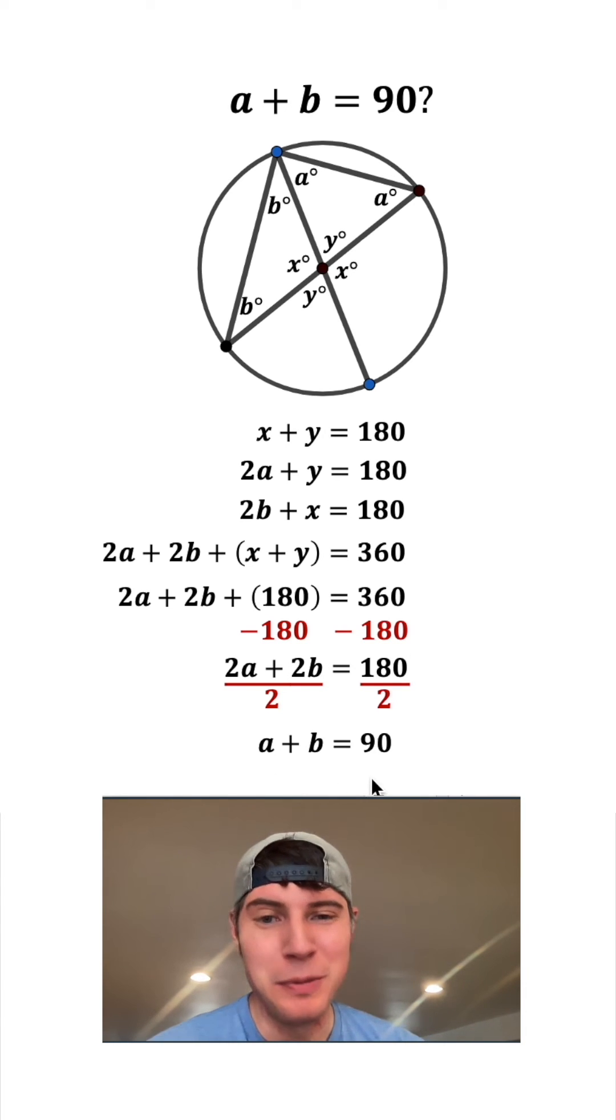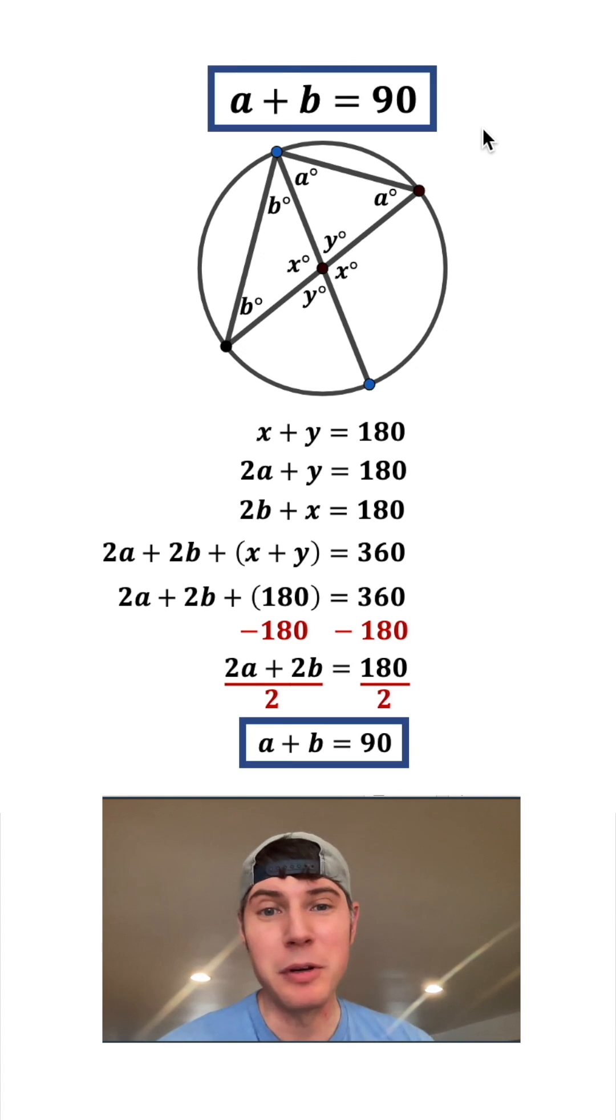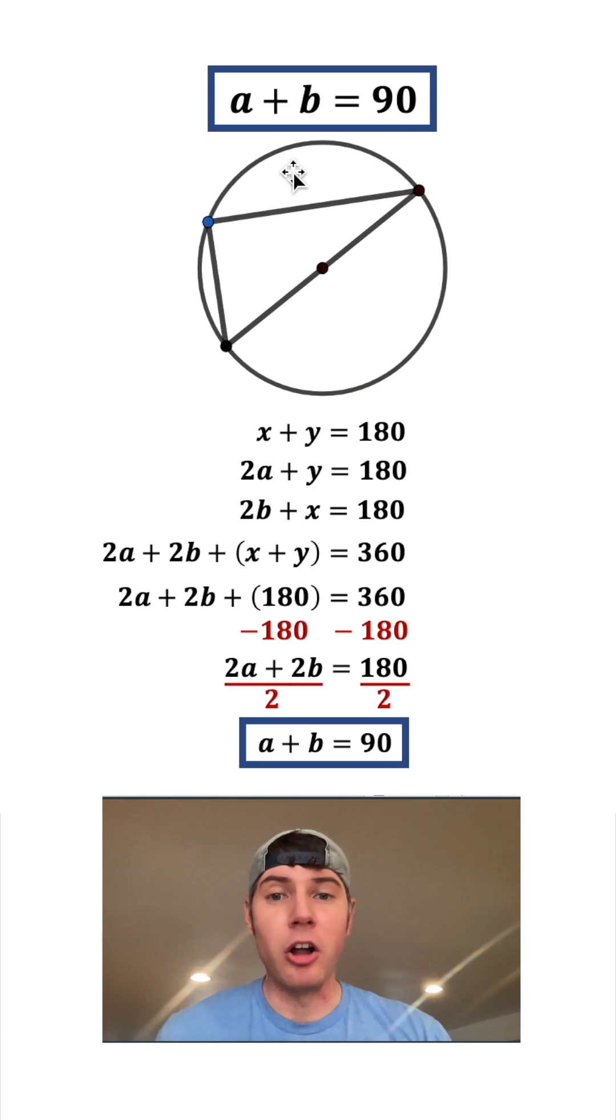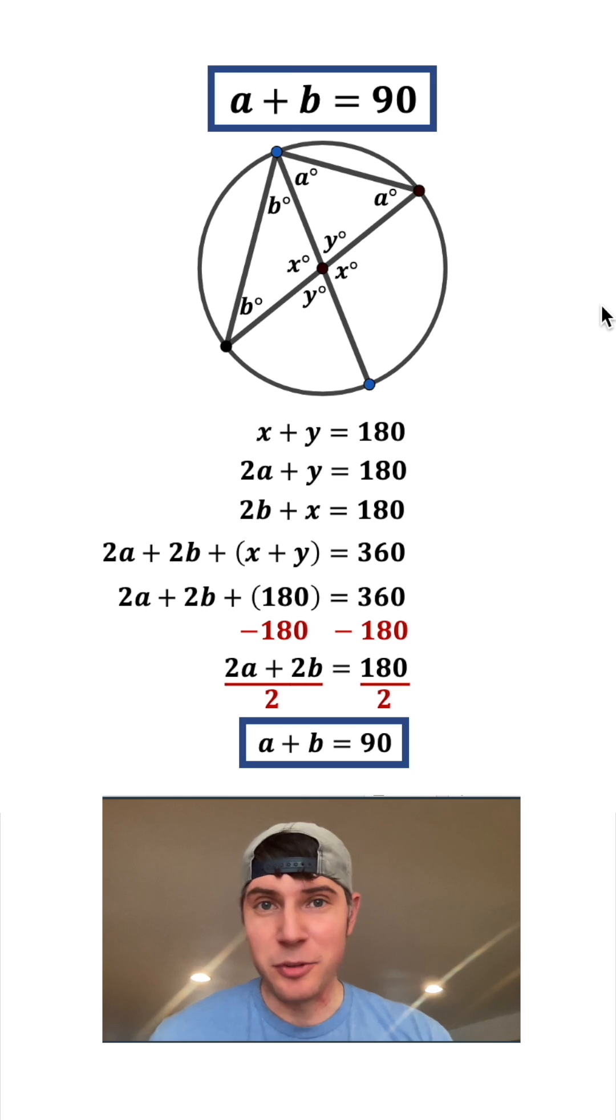And now look at what we have. A plus B equals 90. That is what we were trying to prove. So now we can get rid of this question mark because we know it's true and we can put a box around them. A plus B is this angle right up here. So no matter where we put the point, all of these are going to be right triangles. And this is the reason why. How exciting.